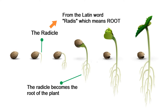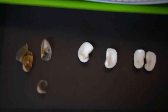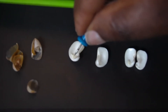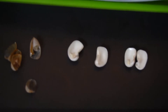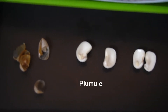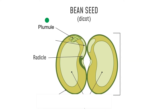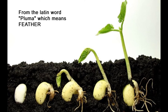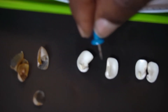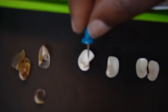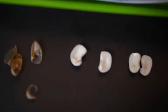The radicle will eventually become the root of the plant. The upper part of the embryo, the baby plant, also has a name — it is called the plumule. The plumule is going to become the leaves of the plant. Plumule is from the Latin word meaning feather. The plumule will eventually become the leaves.